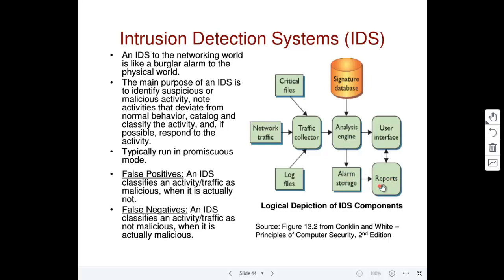The IDS will also generate a report for the user to review later. The user can make the IDS learn that some traffic is not attack traffic — it is normal traffic that should be allowed inside — so it will learn this and update its database. Or it can be updated to recognize some traffic as attack traffic that should no longer be allowed.